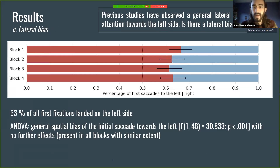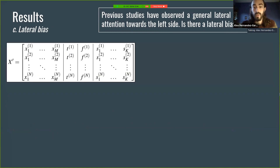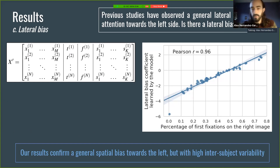Finally, we looked at lateral bias. It has been observed before that there is a tendency — at least for people who read from left to right — and there is an open question about this. We also observed in our data that participants looked more often first at the left image than the right. Our model captured this, and because we introduced lateral bias coefficients in the computational model, we could compare these coefficients with the percentage of fixations on the right image. The correlation was almost perfect, meaning the model captured this well, and that makes the global salience coefficients more reliable.